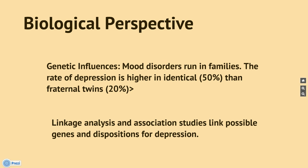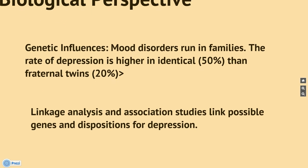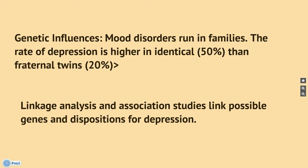There's also a biological perspective to all of this. One is genetic influences. Mood disorders run in families. The rate of depression is higher in identical twins than fraternal twins — 50% to 20%. Linkage analysis and association studies link possible genes and dispositions for depression.